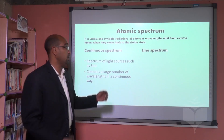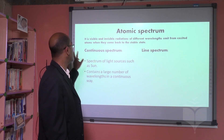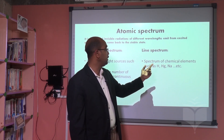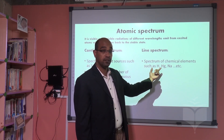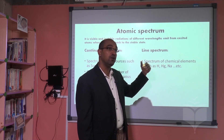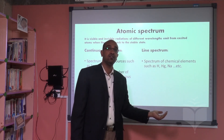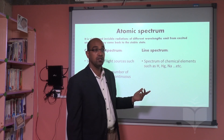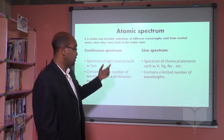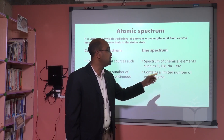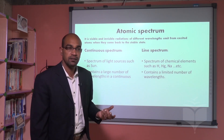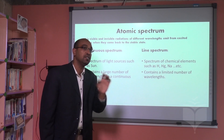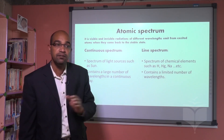On the other hand, we have the line spectrum, which is completely different from the continuous spectrum. The line spectrum is the spectrum of chemical elements such as hydrogen, mercury, sodium, or any other chemical elements. When they get excited and the atom returns to the stable state, it emits radiation called a line spectrum. We call it line spectrum because it contains a limited number of wavelengths — meaning some wavelengths are not included and are completely missing from the spectrum.